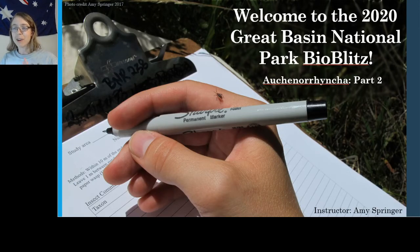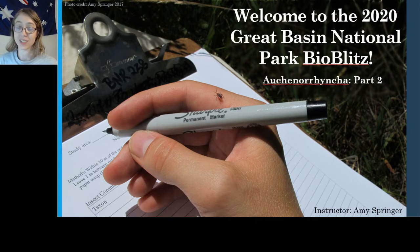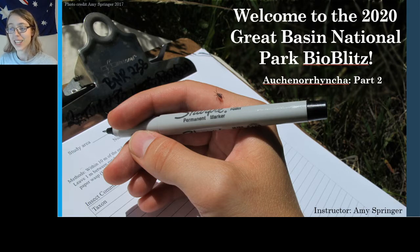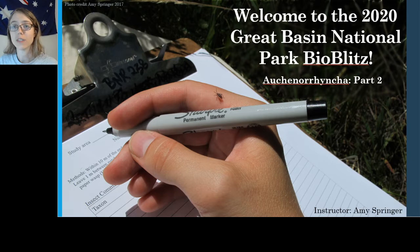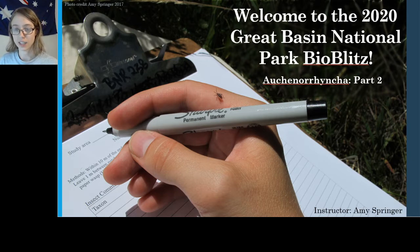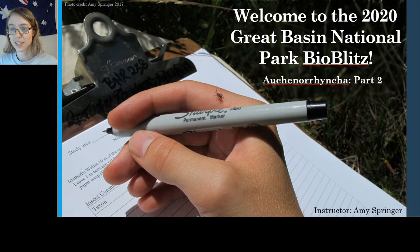Hello again, everyone. Welcome back to the 2020 Great Basin National Park BioBlitz. My name is Amy Springer. I'm a graduate student at Utah State University, and I will be your instructor for the suborder of Hemiptera called Auchenorrhyncha, or the Free Living Hemipterans. This is part two of this three-part series, and in this video I will be covering the first three families on our list.